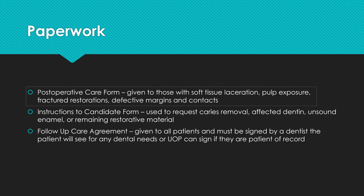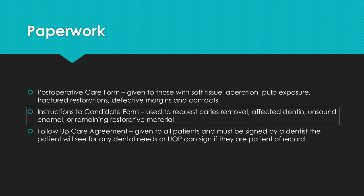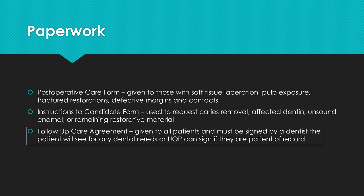For paperwork, there's a post-operative care form given to patients who had soft tissue laceration, pulp exposure, fractured laceration, defective margins, or contacts — people who need dental care sooner rather than later. There's also an instructions to candidate form for requesting caries removal, affected dentin, unsound enamel, or remaining restorative material. All patients need a follow-up care agreement signed by a dentist or dental school. If a patient doesn't have a dentist or our dental school listed, they technically cannot participate and you won't get your score until that paperwork is completed. See page 27 of the candidate guide.